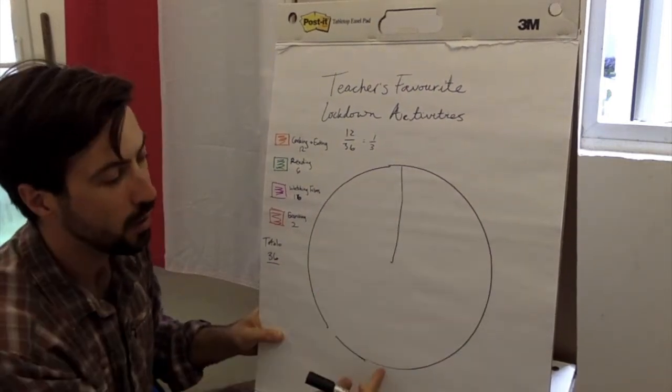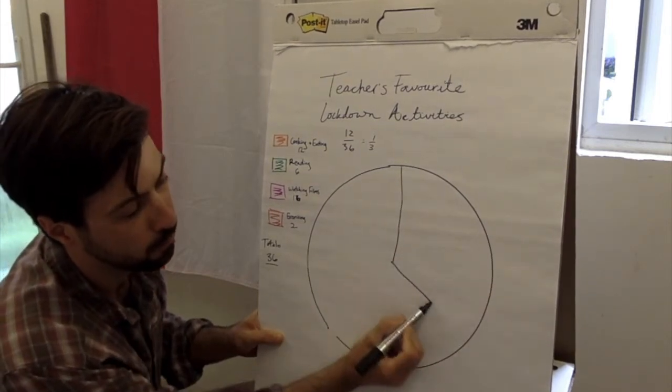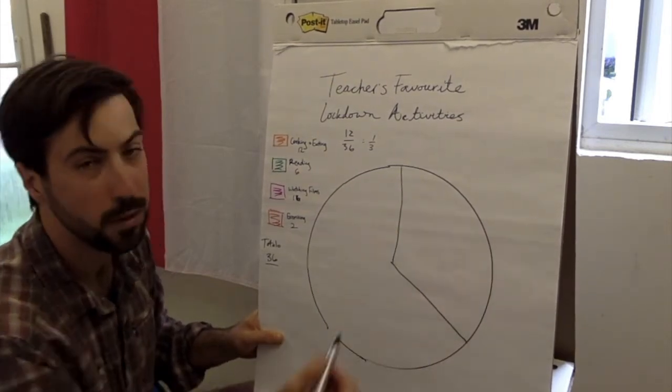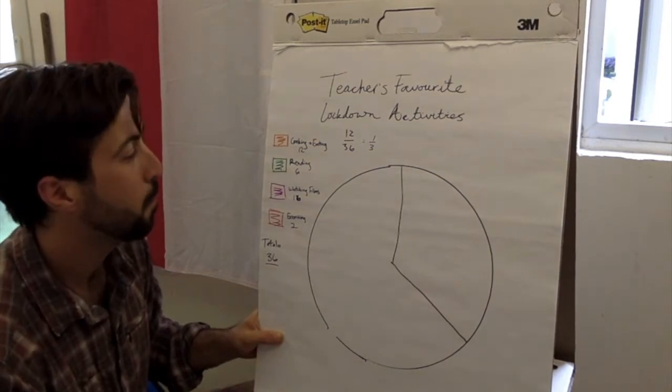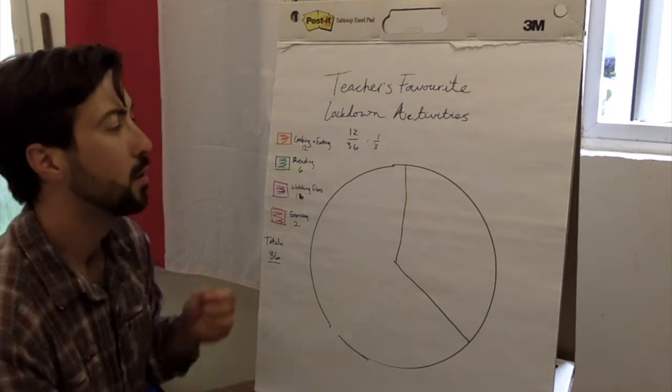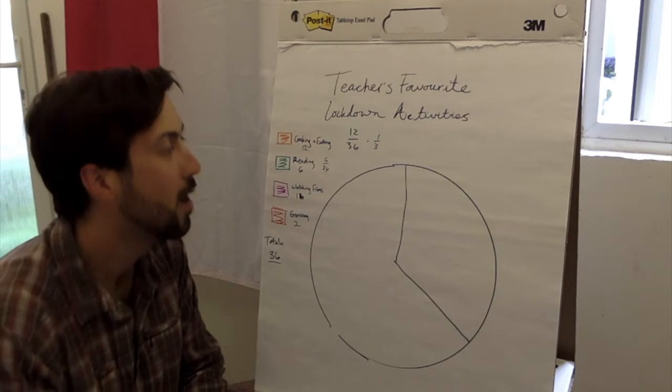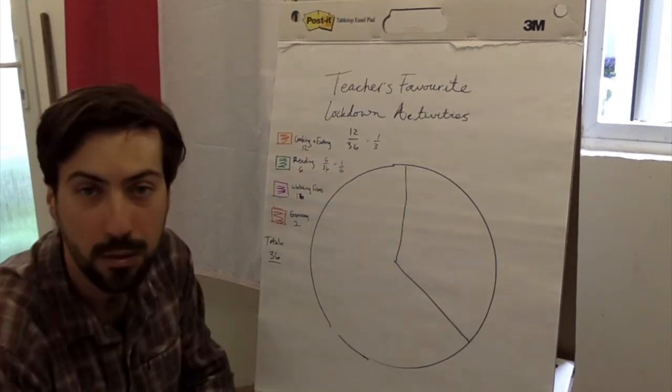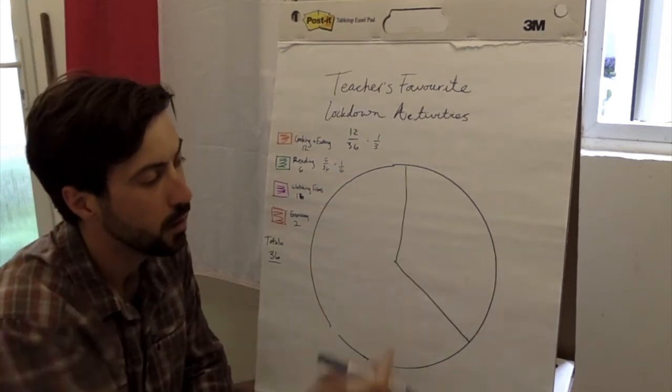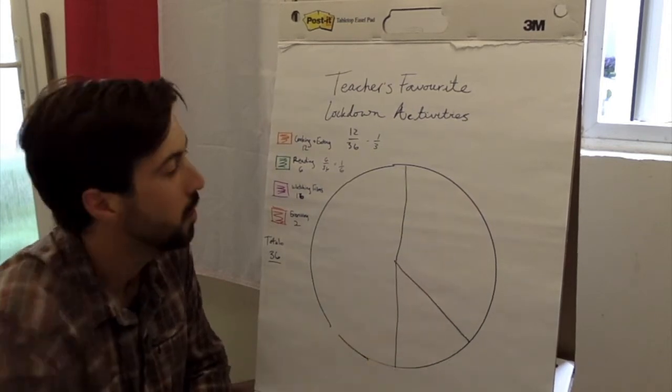Okay, so what I'm trying to explain here, very poorly, is I'm thinking about the angles when I'm drawing in my sections of the pie here. So I saw that 12/36, which is the number of people who chose cooking and eating, would be about one-third of the pie. So I tried to draw that first section to be about one-third. I saw that reading was 6/36, or one-sixth. So that would be another slice of the pie, about right there.